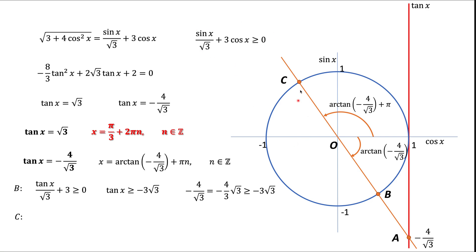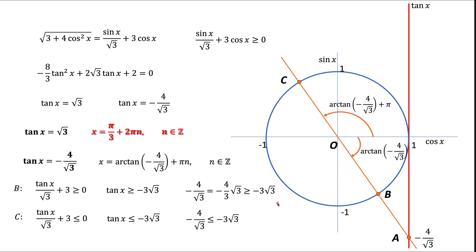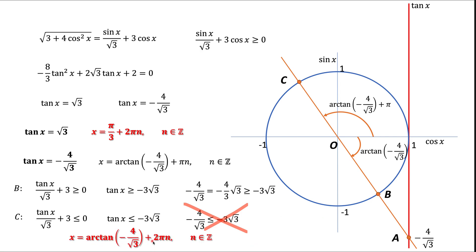For point C, sine is positive but cosine is negative. Dividing the inequality by a negative cosine flips the inequality sign, giving tangent ≤ −3√3. But we previously showed tangent = −4/√3 is strictly greater than −3√3, so this condition is not satisfied. Point C does not work. Therefore, the angles satisfying both the equation and the inequality are those producing point B, giving x = arctan(−4/√3) + 2πn.